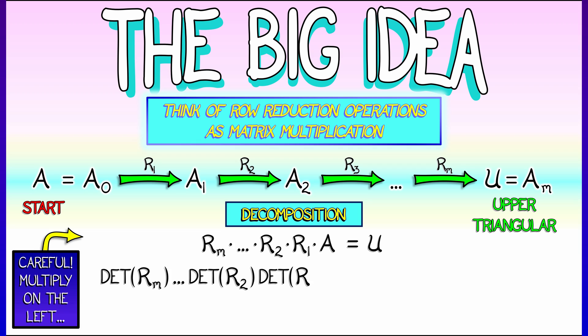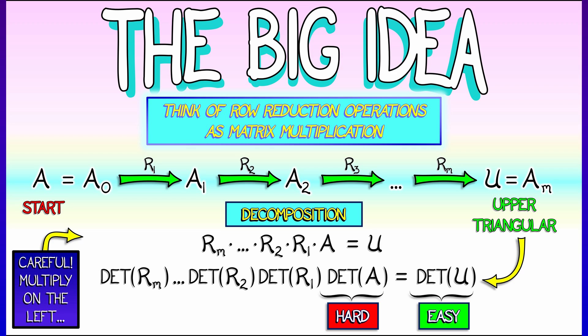Now, I don't know what those matrices are yet, but I do know the multiplicative property for determinants says that the determinant of that product is the product of the determinants. And even though the determinant of A is hard to compute, the determinant of U, that upper triangular matrix, it's easy.